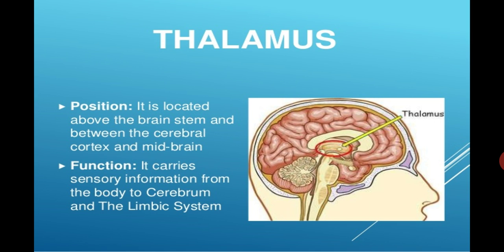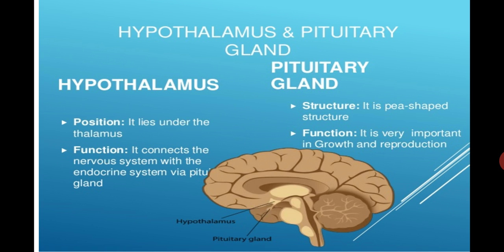Its function: it carries sensory information from the body to the cerebrum and the limbic system. Next we will discuss the hypothalamus. Its position lies under the thalamus. Its function: it connects the nervous system with the endocrine system via the pituitary gland. The pituitary gland is a pea-shaped structure, very important in growth and reproduction. This gland is part of the hypothalamus.